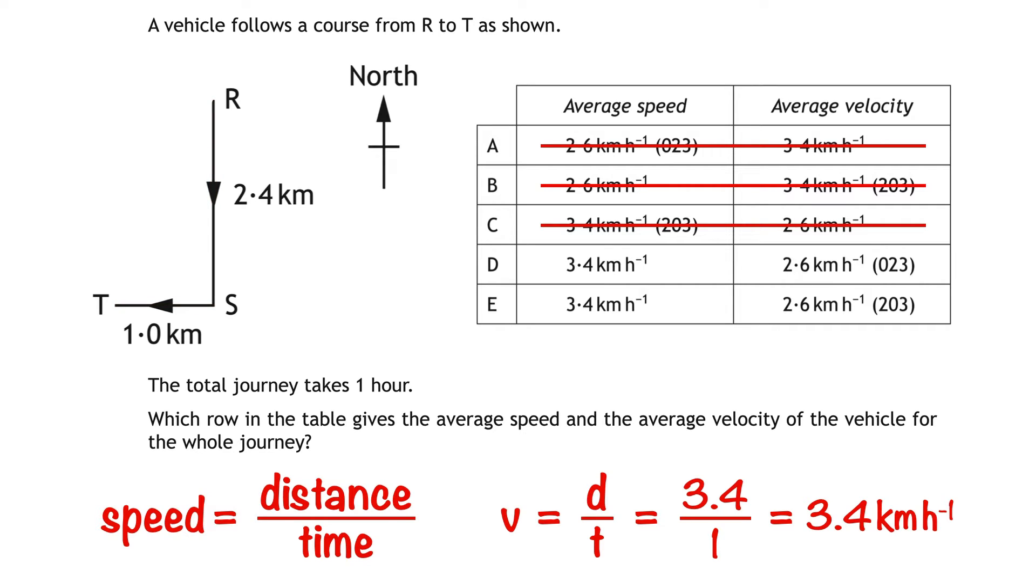Now we'll have to find the velocity of the vehicle from R to T and to do that we'll need to find its displacement both size and direction. It's pretty clear at this stage that the size or magnitude of the displacement must be 2.6 kilometres making the magnitude of the velocity 2.6 kilometres per hour. So in a multiple choice question there's no need to waste time calculating it.